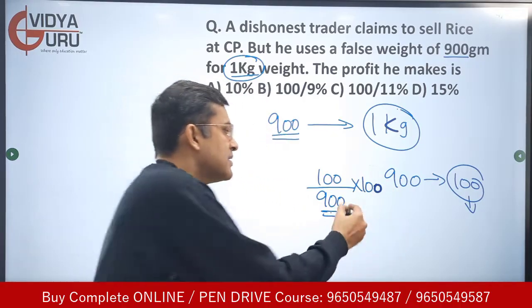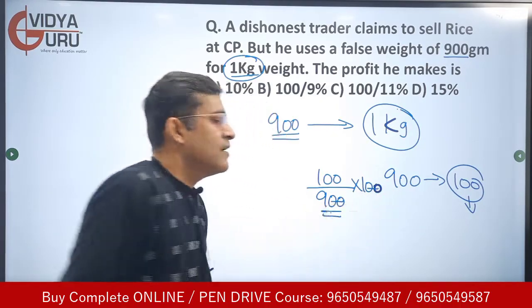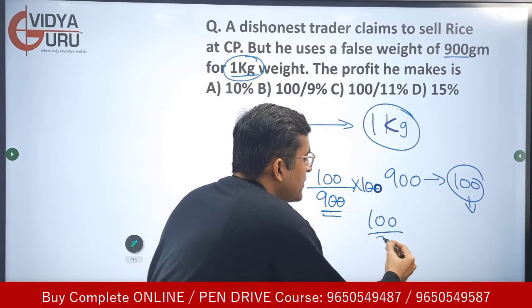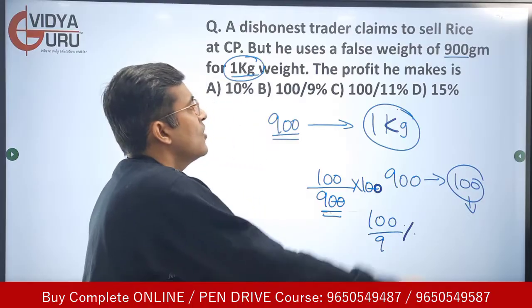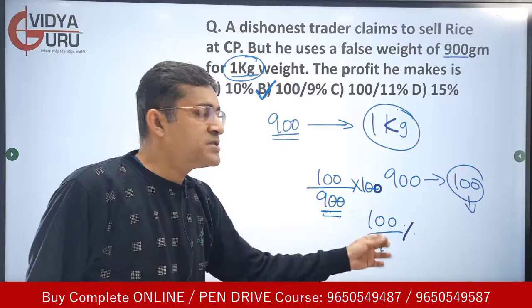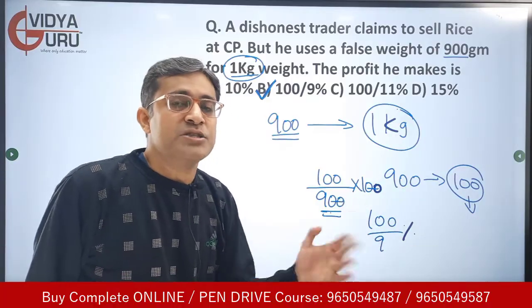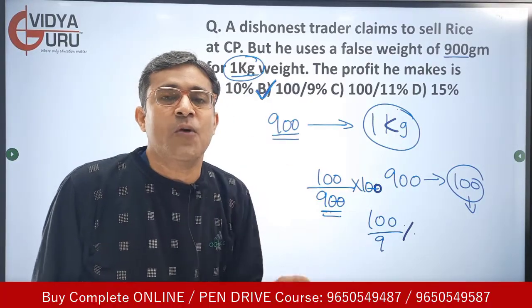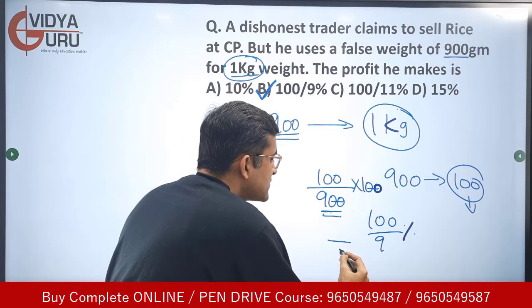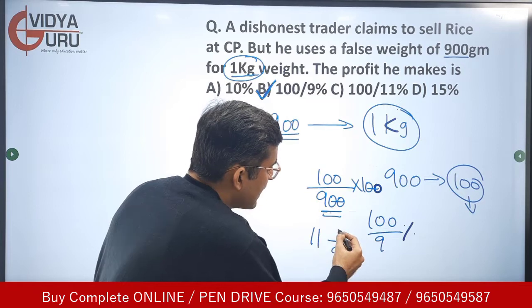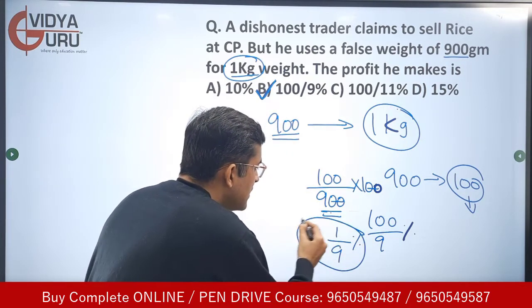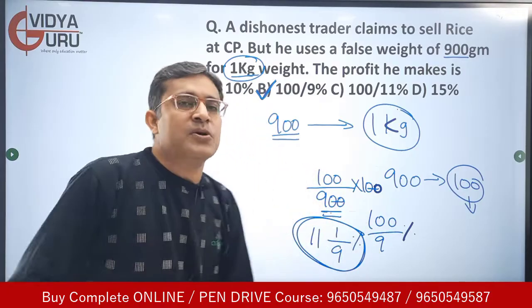The cost price is for 900 grams and the profit is for 100 grams. To calculate the profit percentage: 100 by 900 equals 1 by 9 percent, which is 11 and 1 by 9 percent — somewhat more than 11 percent. That is the profit he makes.